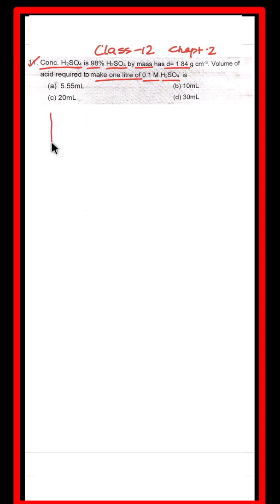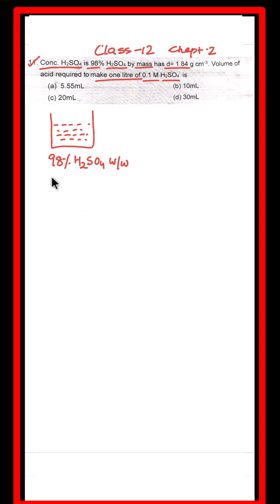MCQ number 11: Concentrated sulfuric acid is 98% H₂SO₄ by mass and has a density of 1.84 g/cm³. Find the volume of acid required to make one liter of 0.1 molar sulfuric acid. Here you have a numerical — suppose you have a container.